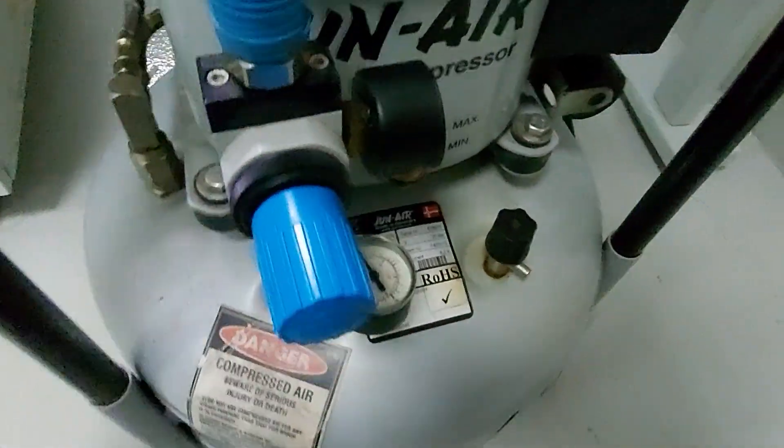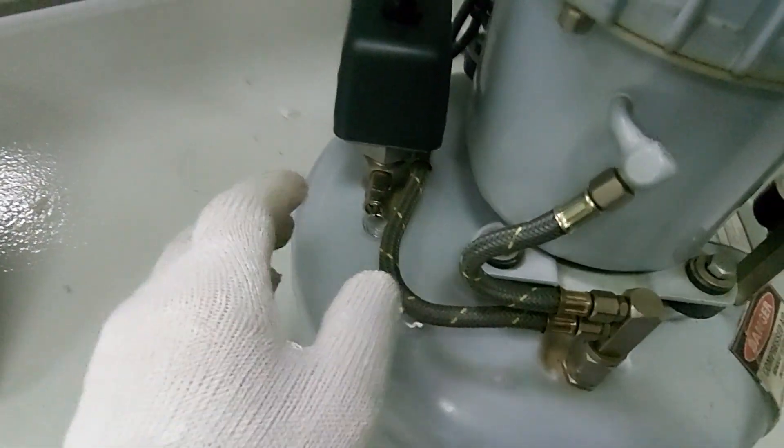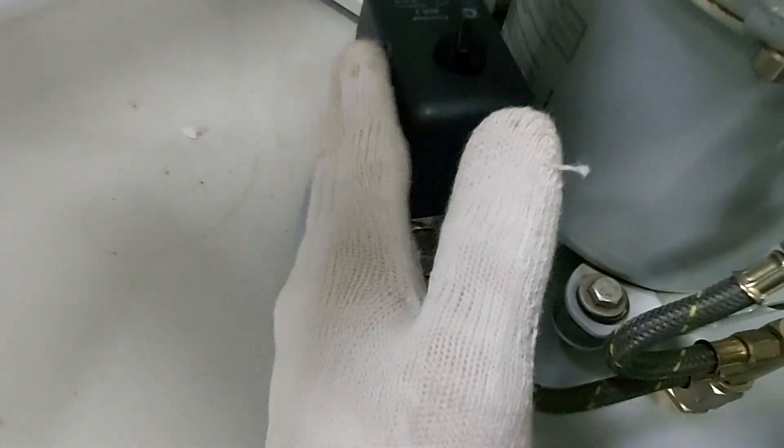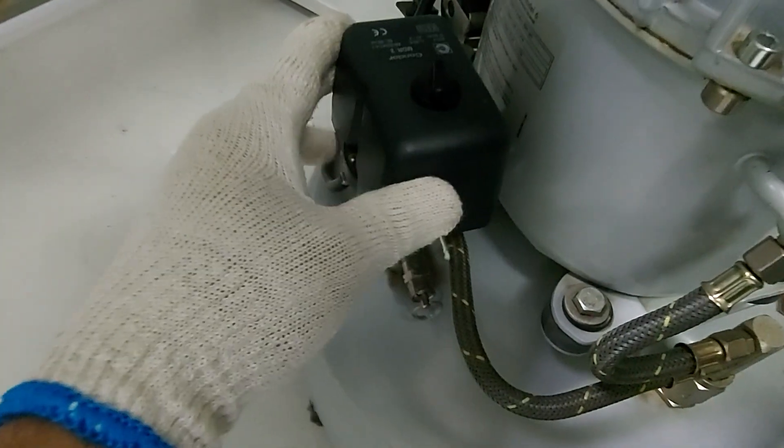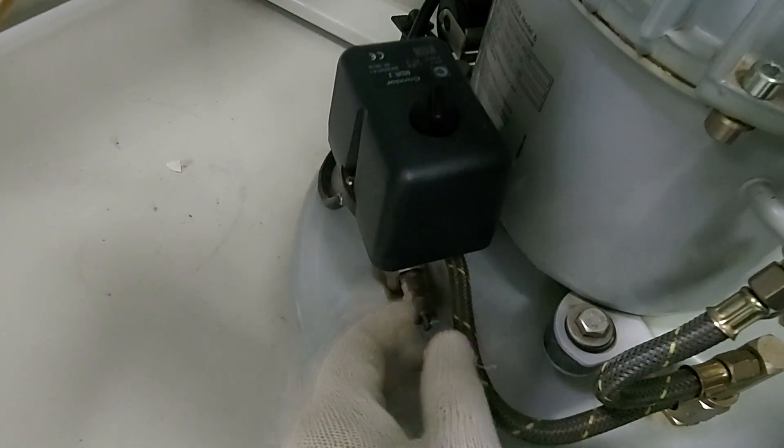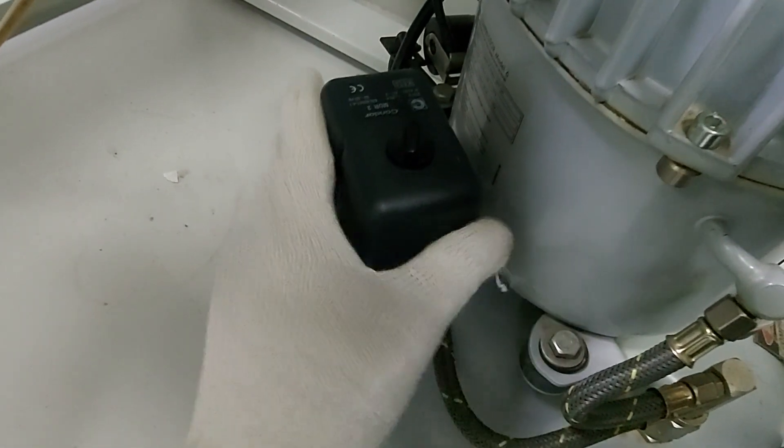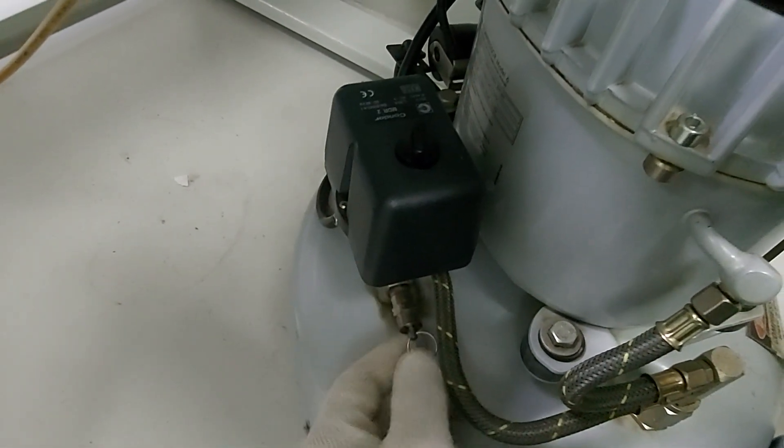If in any case this control pressure switch malfunctions or stops working or has an error, you have to purge it manually by using this safety valve.